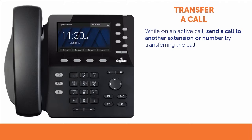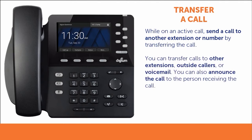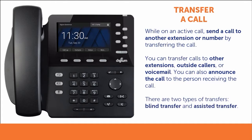Following these simple steps, you can transfer calls to other extensions, to outside callers, directly to voicemail, and even choose whether or not you wish to announce the caller to the person receiving the call. There are two main types of call transfers. A blind transfer sends the caller directly to the person receiving the transfer. An assisted transfer allows you to speak with the person receiving the transfer before completing the transfer.